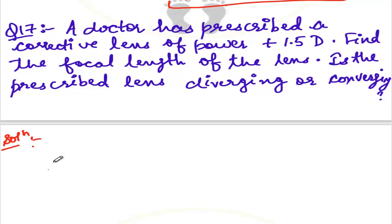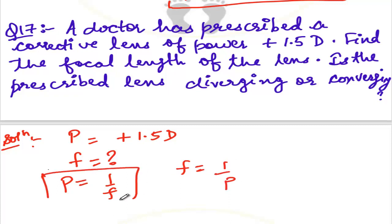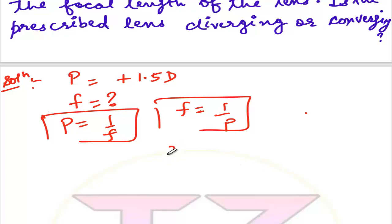First, let's write given: power plus 1.5 diopter. Focal length we have to find. The formula: power P equals 1 by f, and f will be 1 by P. We will put the values: f equals 1 by 1.5.